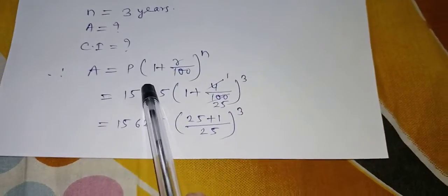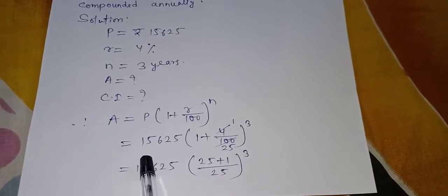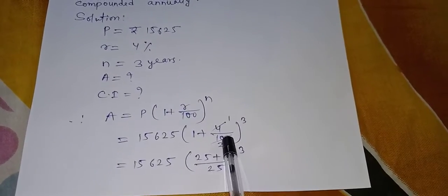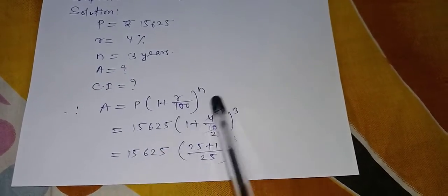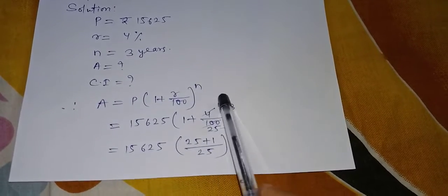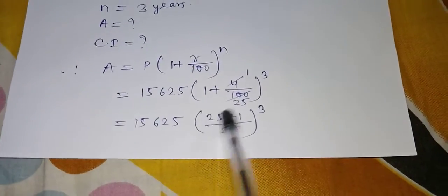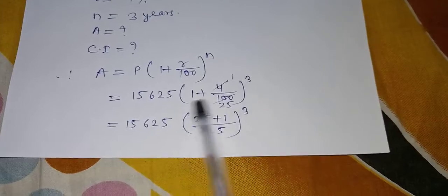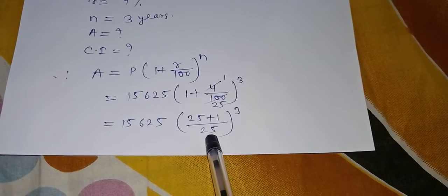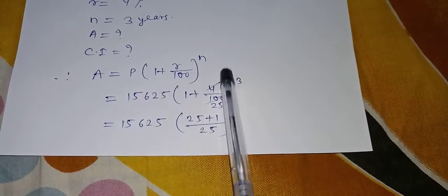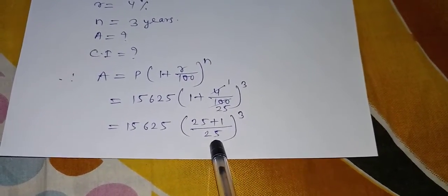So amount formula is A equal to P bracket 1 plus R by 100 to the power N. Where P value is 15,625, 1 is 1, R is 4%, 4 by 100. And N is 3. So N value is 3 years. So here I cancelled 4 and 100, it became 1 by 25. So 25 ones are 25 plus 1. So 25 plus 1 by 25 to the power 3. I did LCM here. This 25 ones are 25 and this 1 comes here, 25 plus 1.